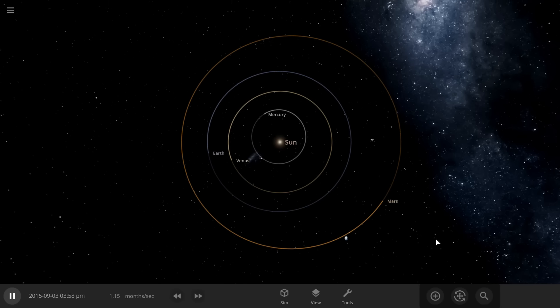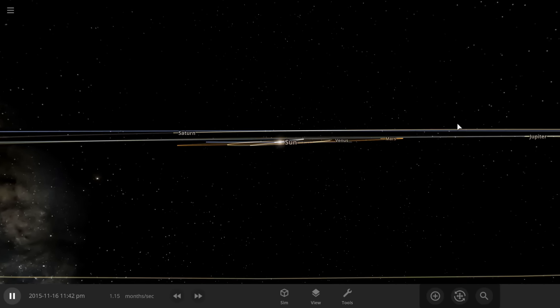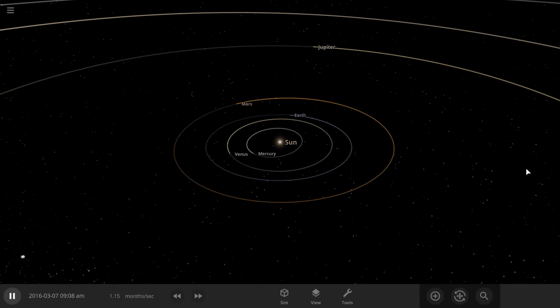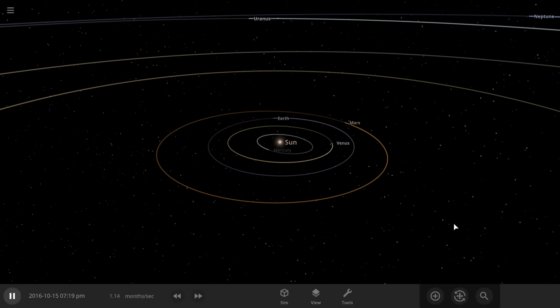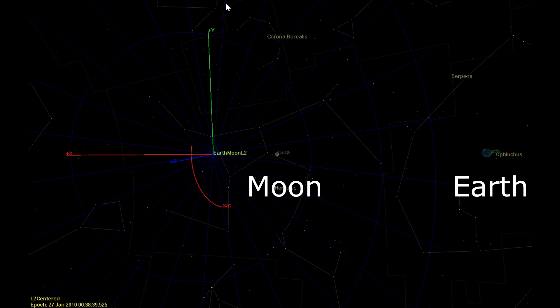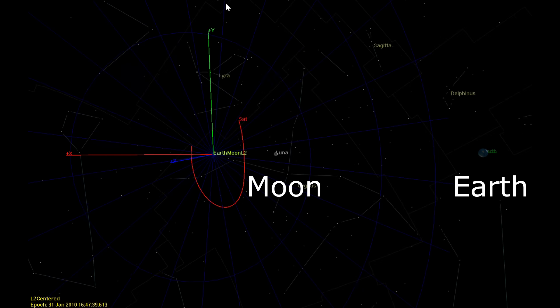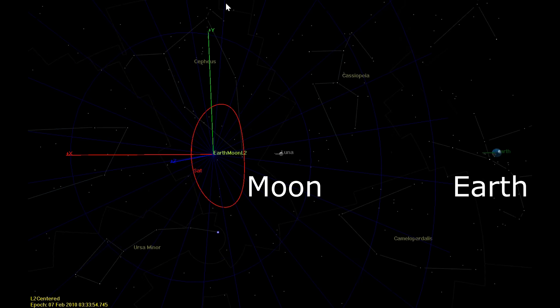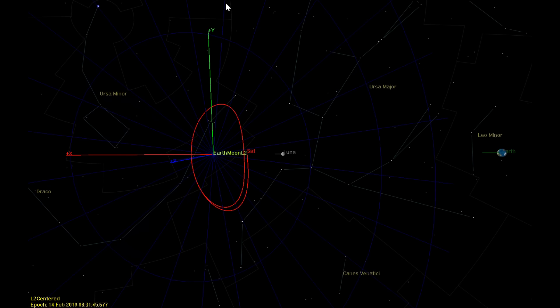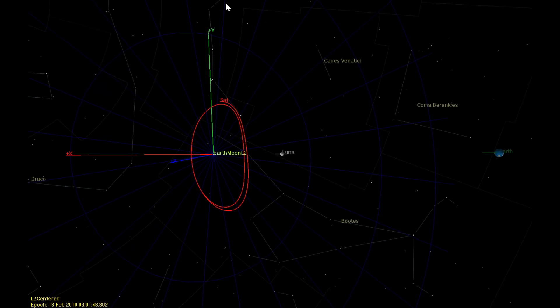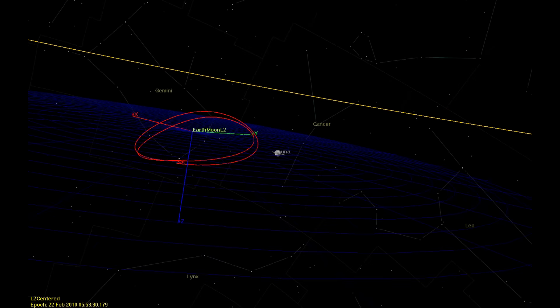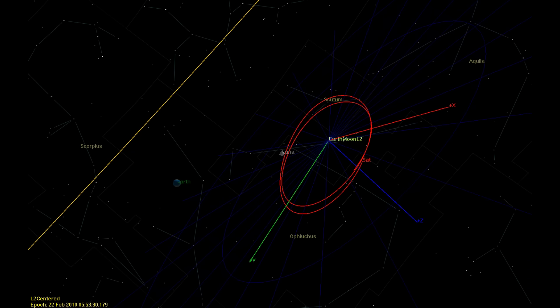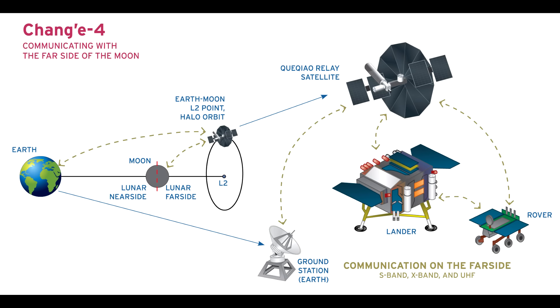While Lagrange's idealized model doesn't exist in reality, real orbits are close enough that they do get stable regions near these Lagrange points, and they can be exploited by spacecraft, for example, which can sit there. One fine example is putting a space satellite at the L2 point on the far side of the Moon in a halo orbit. So this appears to orbit the Lagrange point in space. And this is really useful because by taking this halo orbit, the Earth always has line of sight to the satellite and the satellite always has line of sight to the far side of the Moon. It's very useful if you want to communicate to a spacecraft on the far side of the Moon like Chang'e 4.